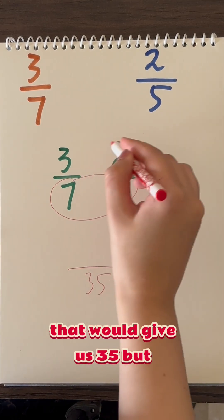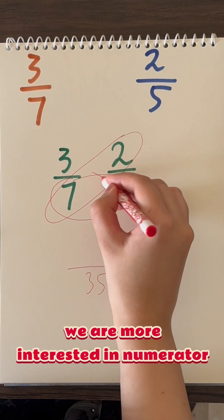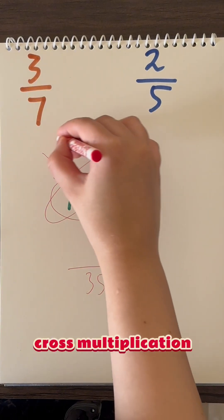That would give us 35, but we are more interested in numerator. For that, we can do cross-multiplication.